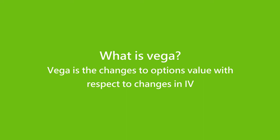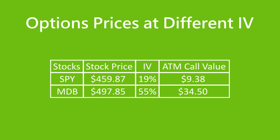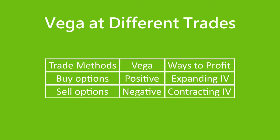Vega is the change to options value with respect to changes in implied volatility (IV). Vega helps us learn about changes in IV to buy low and sell high options for profit. SPY and MDB have similar stock prices but different IV values, leading to different option prices — an SPY ATM call expiring next month is $9.38 at 19% IV, while an MDB ATM call is worth $34.50 at 55% IV. We make money by selling expensive options at high IV and buying cheap options at low IV. Long options have positive vega, profiting from rising IV, while short options have negative vega, profiting from a decrease in IV.